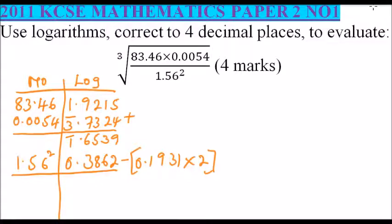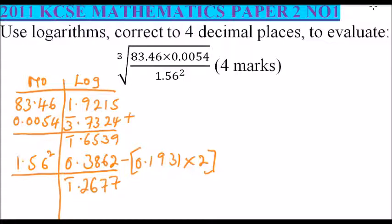When you subtract: the digits give 7, then 13 minus 6 gives 7, then 14 minus 8 gives 6, and 5 minus 3 gives 2. For the bar part, bar one minus zero remains bar one. So we have that result and now need to get the cube root of this number.